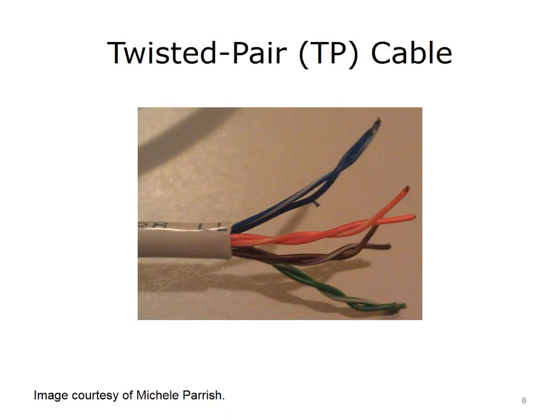The majority of modern networks use twisted pair cable. There are two types of twisted pair (TP): unshielded twisted pair (UTP) and shielded twisted pair (STP). Both contain color-coded pairs of insulated copper wires twisted around each other and encased in a plastic coating. There are typically eight wires twisted into four pairs. The twists in the wire help reduce the effects of EMI; the number of twists per meter or foot is known as the twist ratio. TP also comes in different categories — current networks use Category 5 or 6 (Cat5 or Cat6), which allow for different bandwidths.